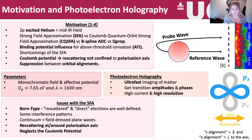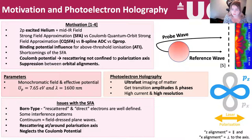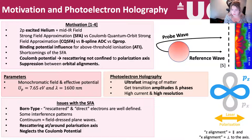Today we start by looking at the motivation and photoelectron holography as a whole. The motivation behind my work is looking at 2p excited state helium in a mid-IR field. We examine the Strong-Field Approximation (SFA), the Coulomb Quantum Orbit Strong-Field Approximation (CQSFA) developed by our group, B-Splines ADC from our Imperial collaborators, and QPROP, a TDSE solver. We look at binding potential influences for above-threshold ionisation, shortcomings of the SFA, Coulomb potential rescattering not confined to the polarisation axis, and suppression between orbital alignments. PZ and PX are the two alignments for the 2p excited state helium: PZ is parallel to the laser polarisation, and PX is perpendicular.